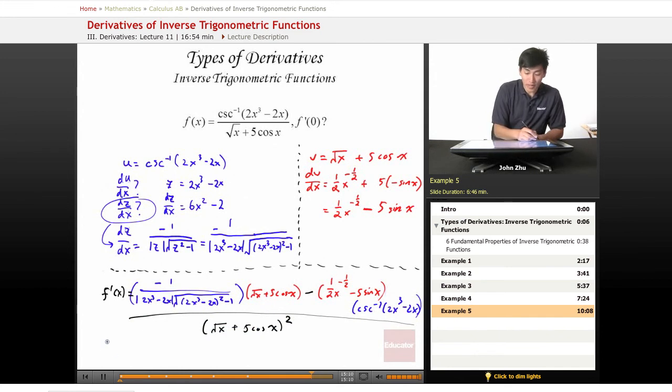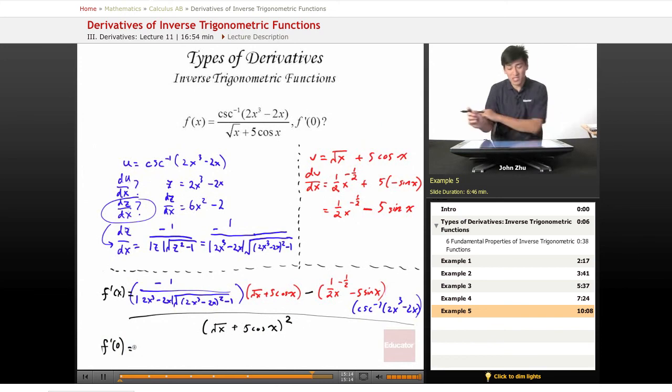Wow. All right. Now we have to take the derivative at 0. So there are a lot of x terms, and plugging in 0 is not always a bad thing. Most of the time, it's much easier than plugging in any other number. So this might not be too big of a deal.